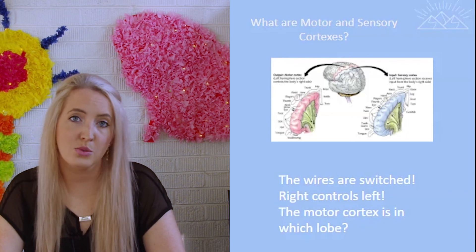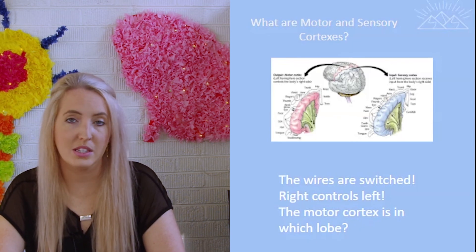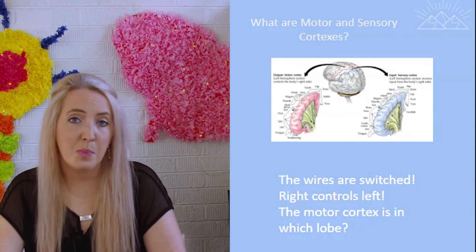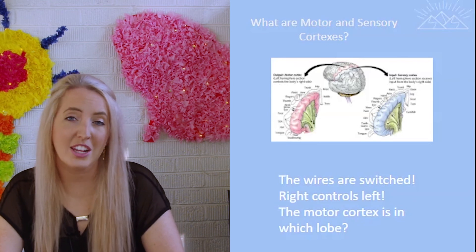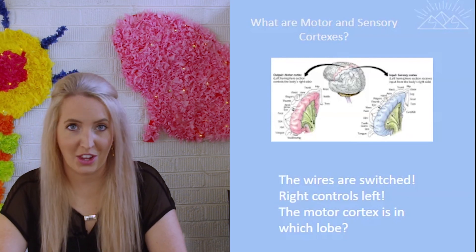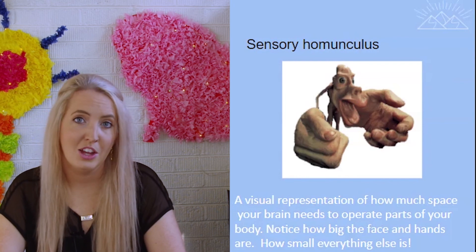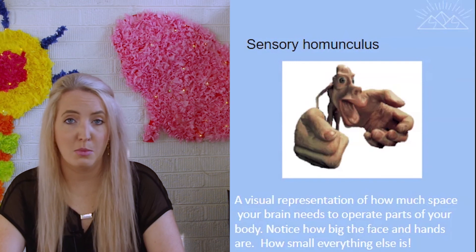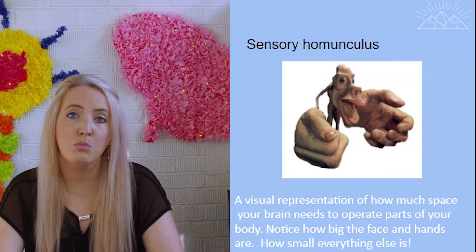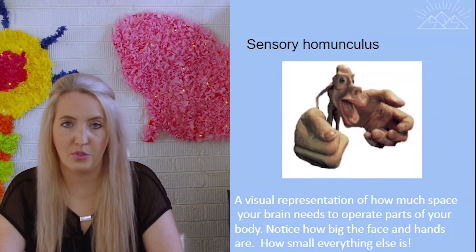The opposite side of the brain controls the opposite side of the body, so when you lift your right hand, the left side of your brain controls that movement. Each body part also has a different amount of space in the brain dedicated to it. To show a visual of how much brain space is required for each body part, we have what's known as a homunculus — a visual representation showing how much space is dedicated to each part. Our hands and face are much bigger because we use them most often, so they require more brain space than, say, our leg or torso.